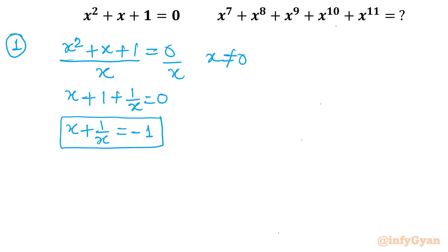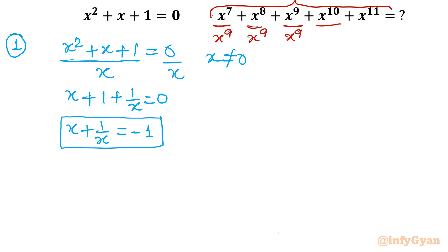Now what we have to find out? We have to find out this expression value. So I will do the same thing — I will divide this whole expression by the central term x power 9. As you can see, x is not a solution of the quadratic equation, so x is nonzero and I can divide.